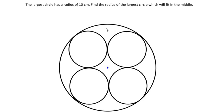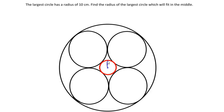Find the radius of the largest circle which will fit in the middle. So imagine that if I am going to draw a circle at the center — which looks somewhat like this — this is the circle which fits in the middle. We have to find out the radius of this small circle at the center.